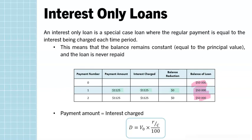We can use Finance Solver to help calculate values around interest only loans, but sometimes it's easier to simply calculate the payment amount using the formula. D is our payment amount, V0 is the balance or principal of the loan, and R is our interest rate per annum divided by C compounding periods, adjusting for any compounds throughout the year.